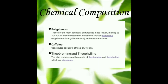Polyphenols consist of flavonoids, epigallocatechin gallate, abbreviated as EGCG, and catechins. Next is caffeine, which constitutes about 3% of dry weight. And next is theophylline and theobromine, which are the stimulants in the tea.